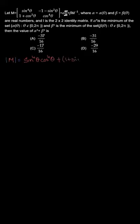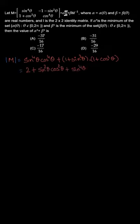Since we have M inverse, determinant of M will be found by cross-multiplying the main diagonal elements minus the other two. So we get sin⁴θ · cos⁴θ plus (1 + sin²θ)(1 + cos²θ), which simplifies to 2 + sin²θ + sin²θ·cos²θ + sin⁴θ + cos⁴θ.